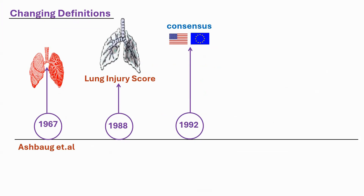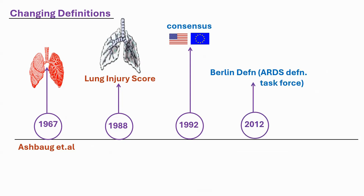All these definitions are covered in a separate topic on newer definitions of ARDS. A consensus statement was made by a US and Europe group in 1992; they altered the definition of the lung injury score and came out with a new definition. This was remodified by the Berlin definition in 2012 by the ARDS Definition Task Force, which we have largely adopted since.